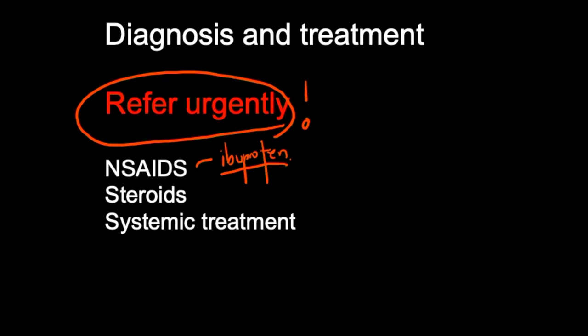Steroids can help control inflammation. It's also important to think about what's underlying or causing the scleritis — for example, if the patient has rheumatoid arthritis, that condition may need to be addressed with immunosuppressive drugs, which weaken the immune response when the condition is severe. In very severe cases, surgery might be needed to repair the eye and stop further vision loss. When scleritis is caused by another disease, that disease also needs treatment to control symptoms. Keep in mind that despite treatment, scleritis may come back.